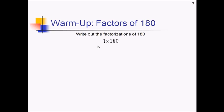So starting at 2, we've got 2 times 90, 3 times 60, 4 times 45. Next one's a little trickier, 5 times 36, 6 times 30, and then we also have 9 times 20, 10 times 18, and the last one is going to be 12 times 15. These are good ones to have memorized.